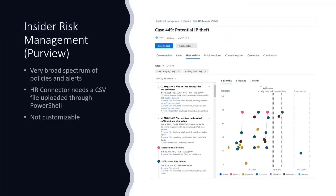Insider risk management is very good, but it's a very broad spectrum of alerts — not only email checking and seeing who sends emails externally with attachments, but also SharePoint and Teams. You can even see if somebody downloads something to a USB drive. So it's very, very broad.